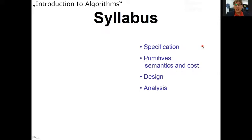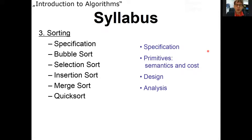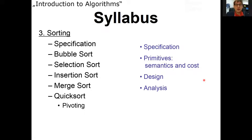We use these primitives to design and analyze algorithms. In Chapter 3 we first do a formal specification of the sorting problem, then we discuss bubble sort — my goal is to provide a new perspective — followed by selection sort, insertion sort, merge sort, quick sort. Quick sort turns out to be not as quick as commonly perceived, because in the worst case it is as bad as bubble sort with quadratic running time, unless we add sophisticated pivot selection.